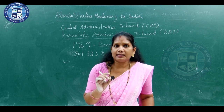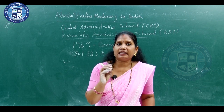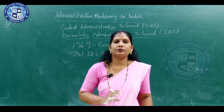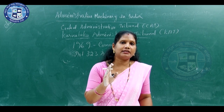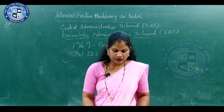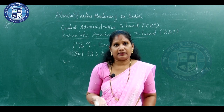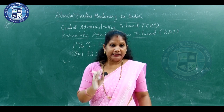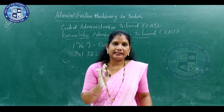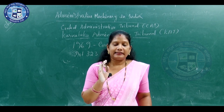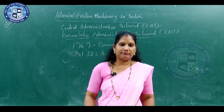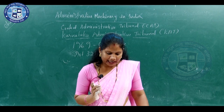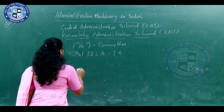Article 323A authorized the parliament to make a law for the adjudication of disputes relating to the recruitment and conditions of services of public persons. Though the 42nd amendment sowed the seeds of the administrative tribunal, it did not fructify till 1985. Only in January 1985, both houses of parliament passed the bill and with presidential assent, the Administrative Tribunal Act 1985 was passed.